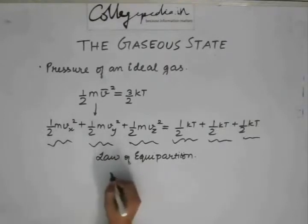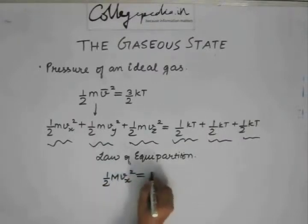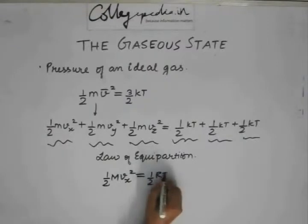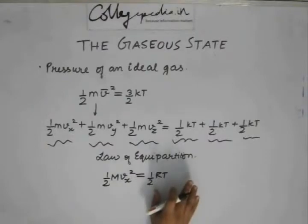So, for one mole, this is for one molecule. If we have one mole, we have half capital M Vx square being equal to half RT. We have just multiplied this with NA, that is the Avogadro's number.